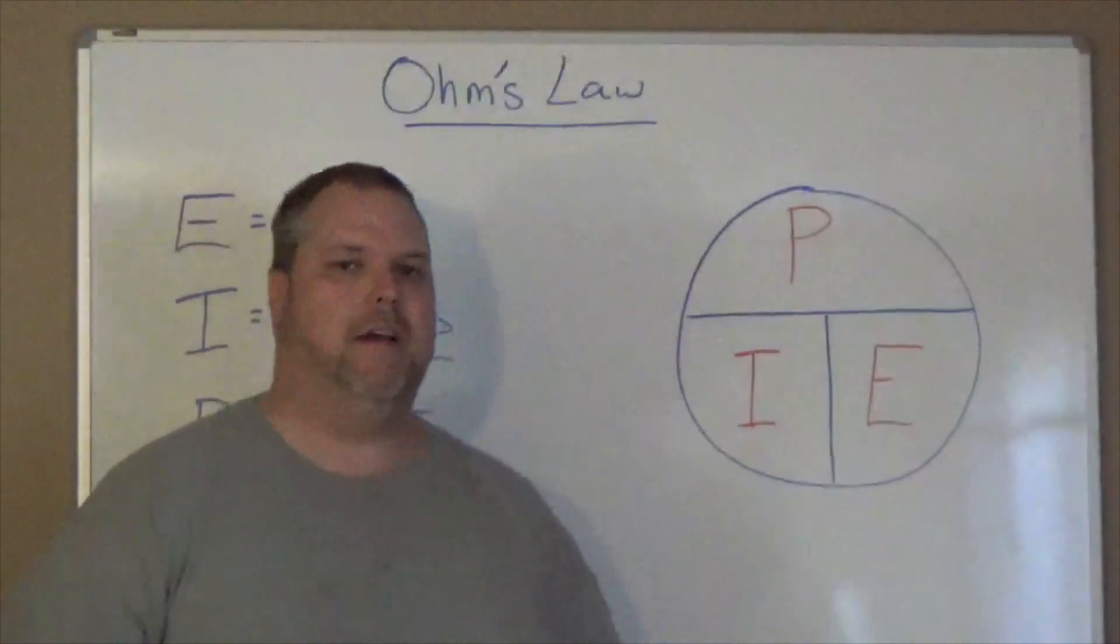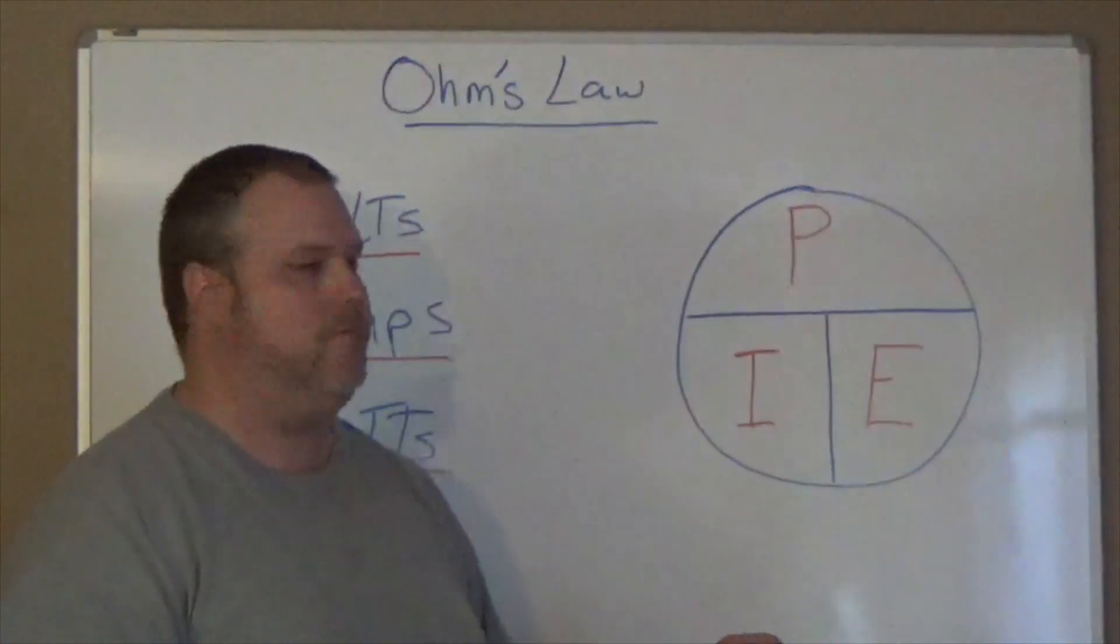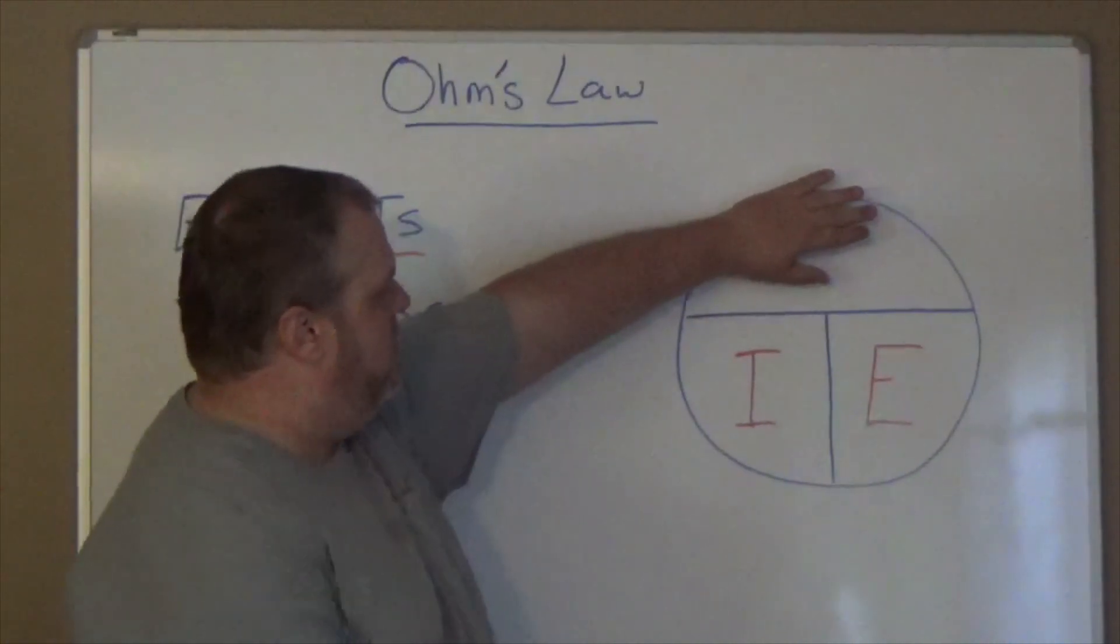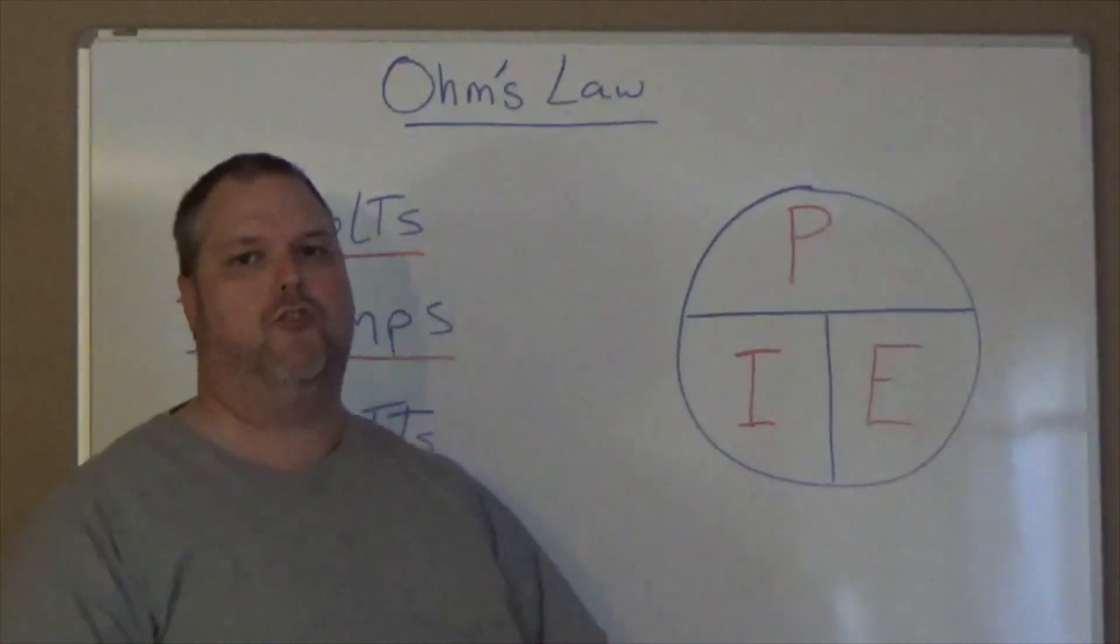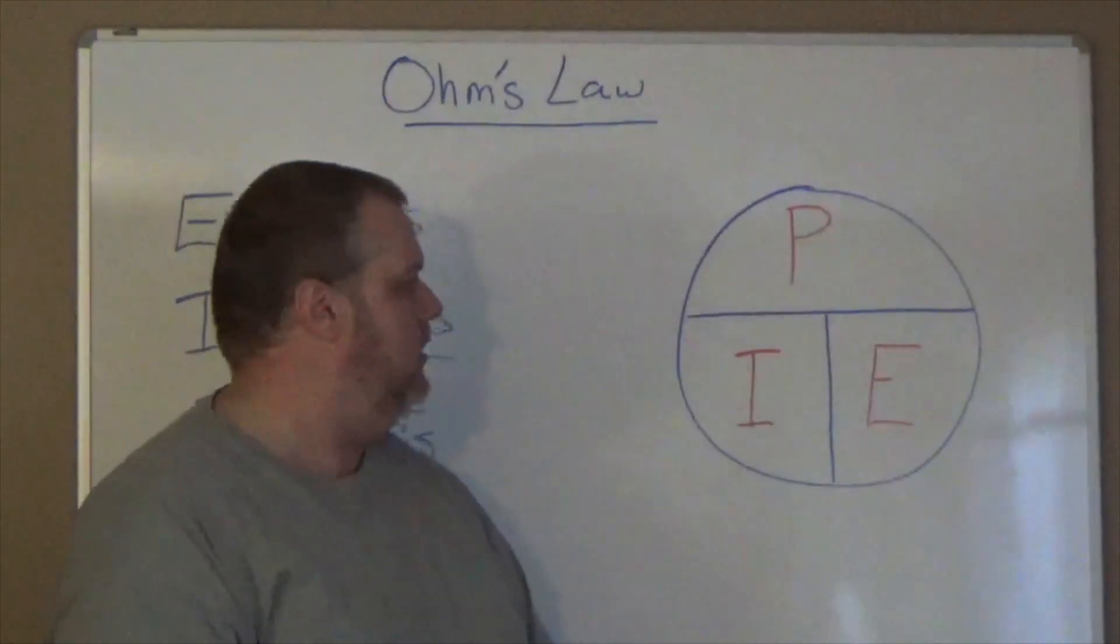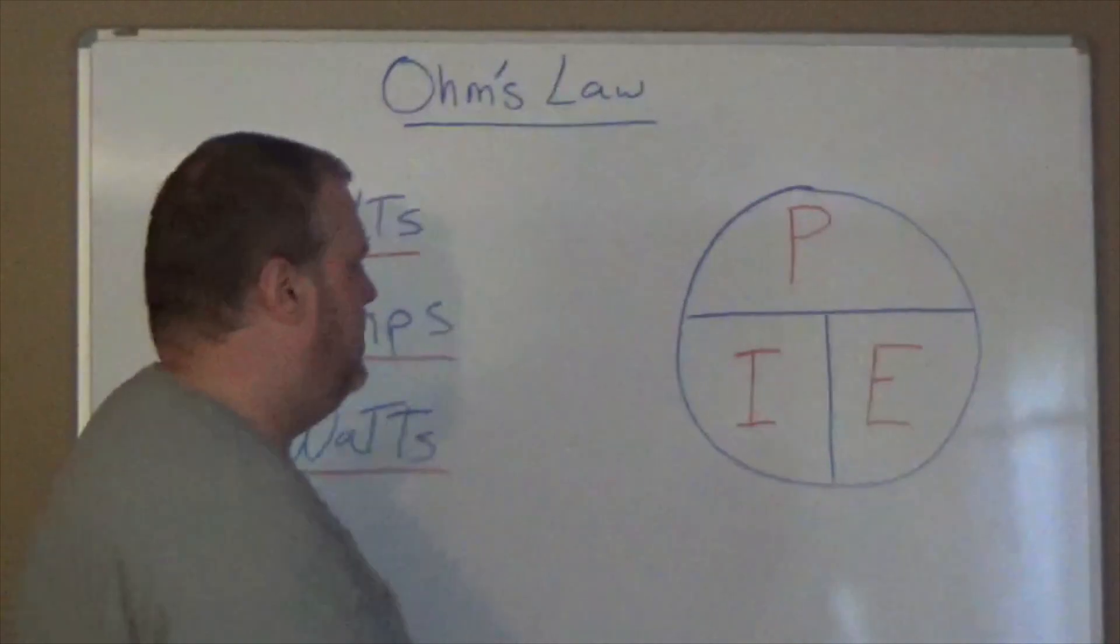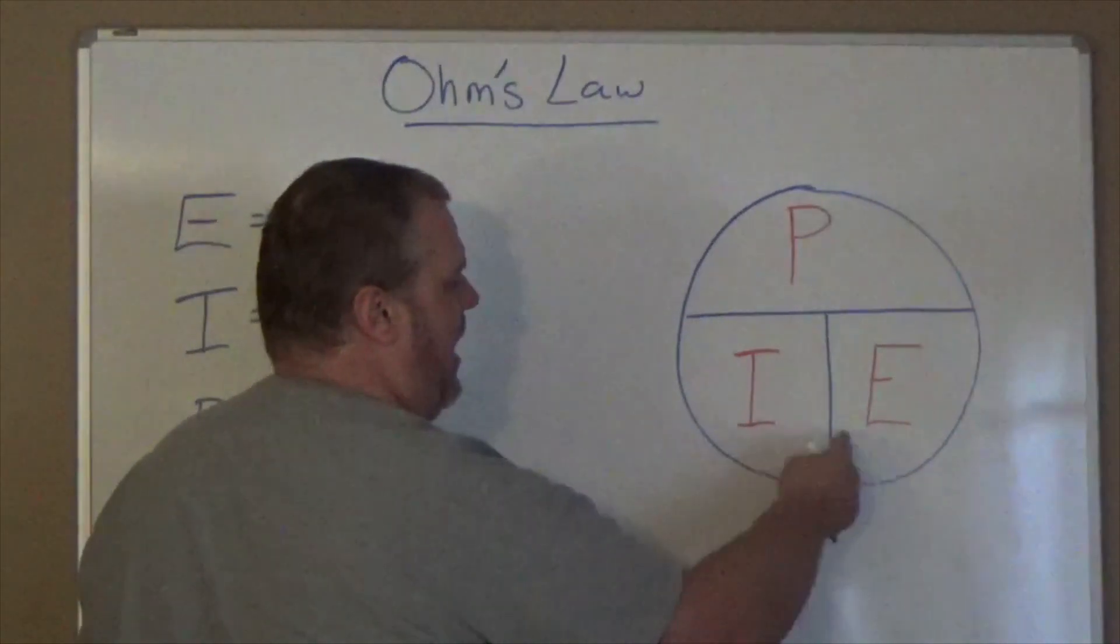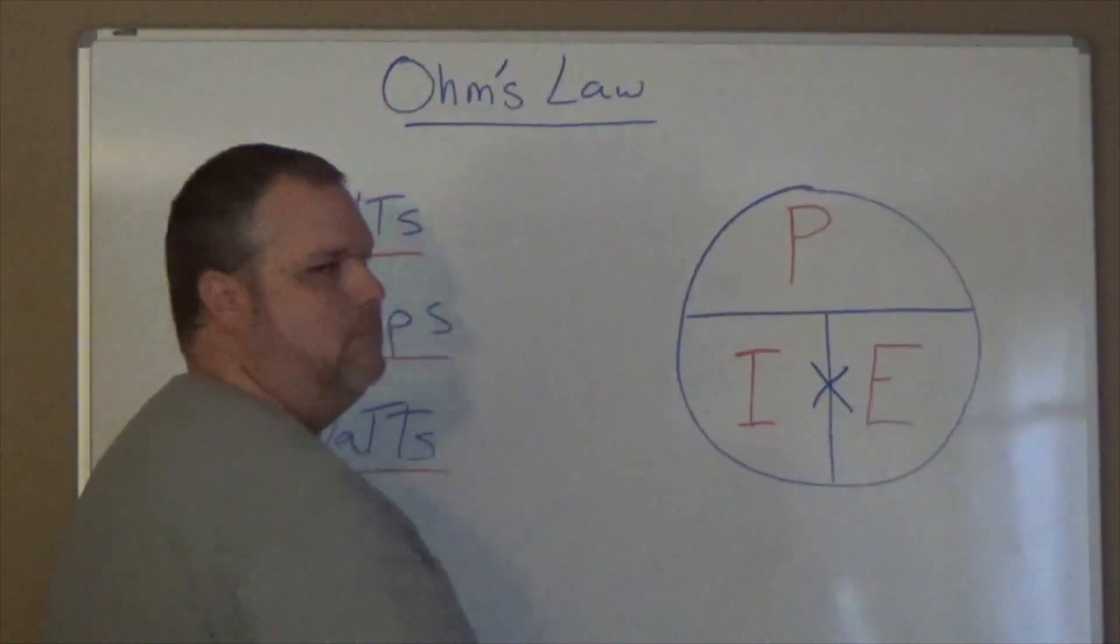So if I wanted to find P, I would cover up P. This means I would have I and E that I would be looking for. But there's a little trick with this pie chart. Our pie chart works like this: P is equal to I times E. So this little line here will stand for our multiplying symbol.